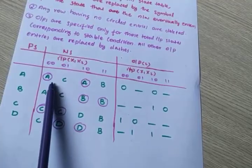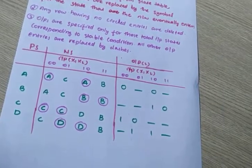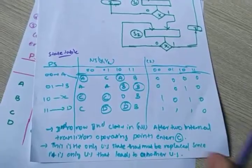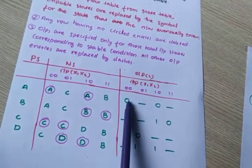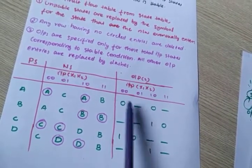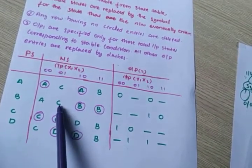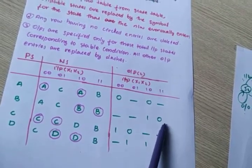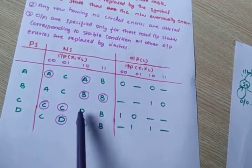In the state table, if A is the present state, output is 0. For C, it is not stable, so it is dash. This is stable, so output is 0. Unstable entries get a dash. These two are stable, so we write the corresponding values found from the expression. Not stable — dash. Like that, we completely fill up the table.